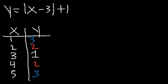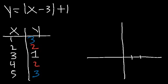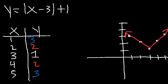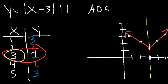So now let's go ahead and graph the equation. The first point is at (3, 1), then we have (4, 2) and (2, 2), then (5, 3) and (1, 3). So we can see the V shape. As long as you plot it around the vertex, you're going to get a nice V-shape graph. The axis of symmetry is the x-coordinate of the vertex, so for the AOS you could simply write x is equal to 3.